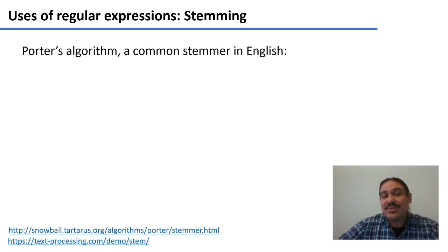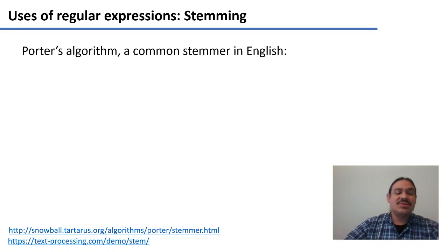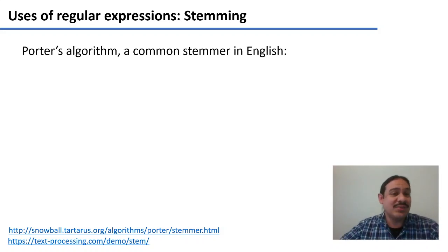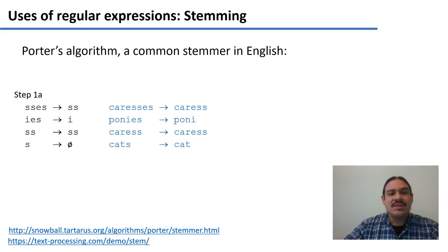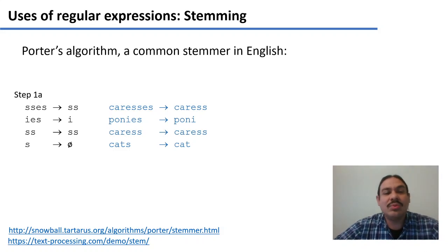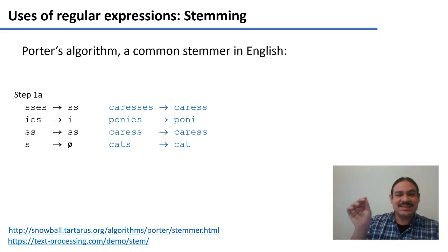There are several algorithms to implement stemming. A very common algorithm in English is called the Porter's algorithm. I'm leaving the website in the lower left of your screen where we're going to demo the stemming and the actual implementation of the algorithm. What this algorithm does is use regular expressions to decompose words and get to their stems. For example, with a word like 'caresses,' it transforms the 'sses' part into just 'ss' — caresses to caress.